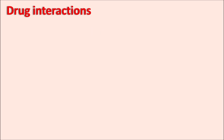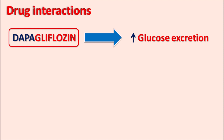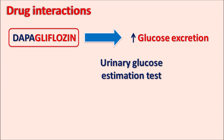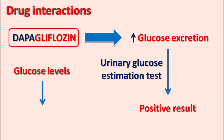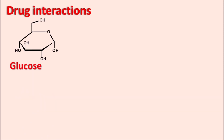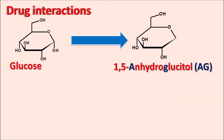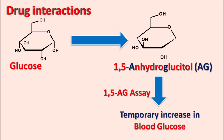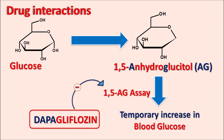Regarding drug interactions, Dapagliflozin shows interactions with laboratory tests. Since it increases glucose excretion, urinary glucose estimation tests may give false positive results. Glucose levels in diabetic patients should therefore be estimated using blood tests such as the GOD-POD method or HbA1c. Additionally, Dapagliflozin interferes with the 1,5-anhydroglucitol (1,5-AG) assay, which estimates temporary increases in blood glucose, producing abnormal results in that test.